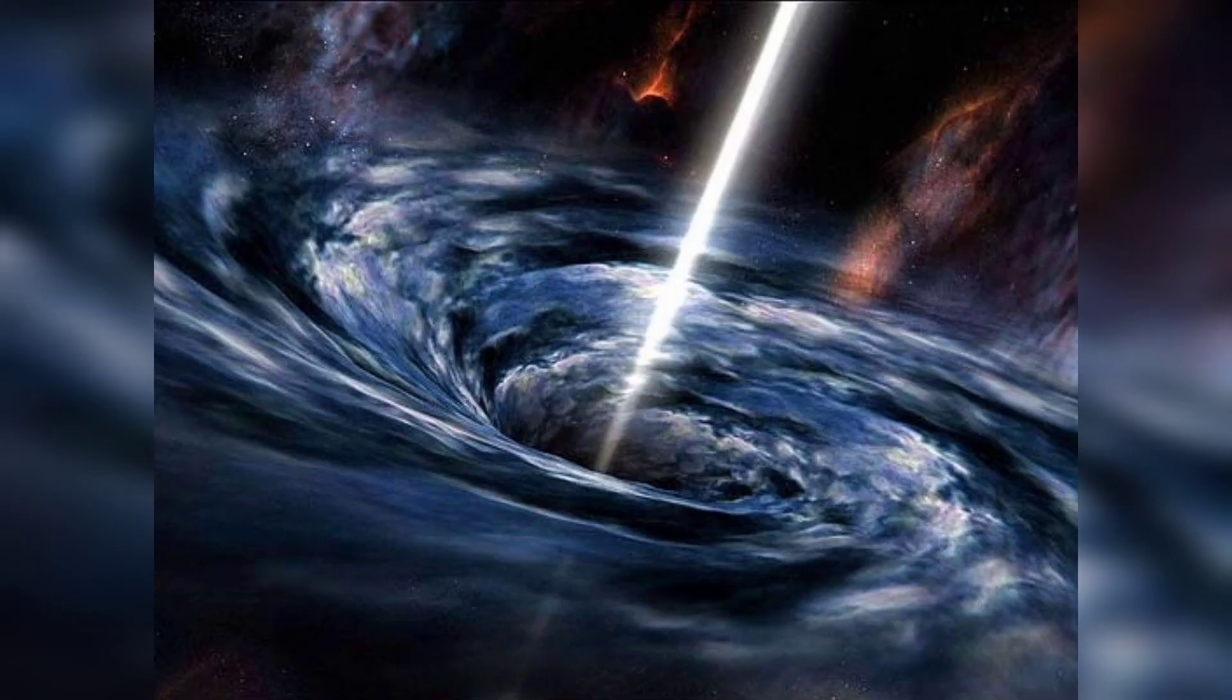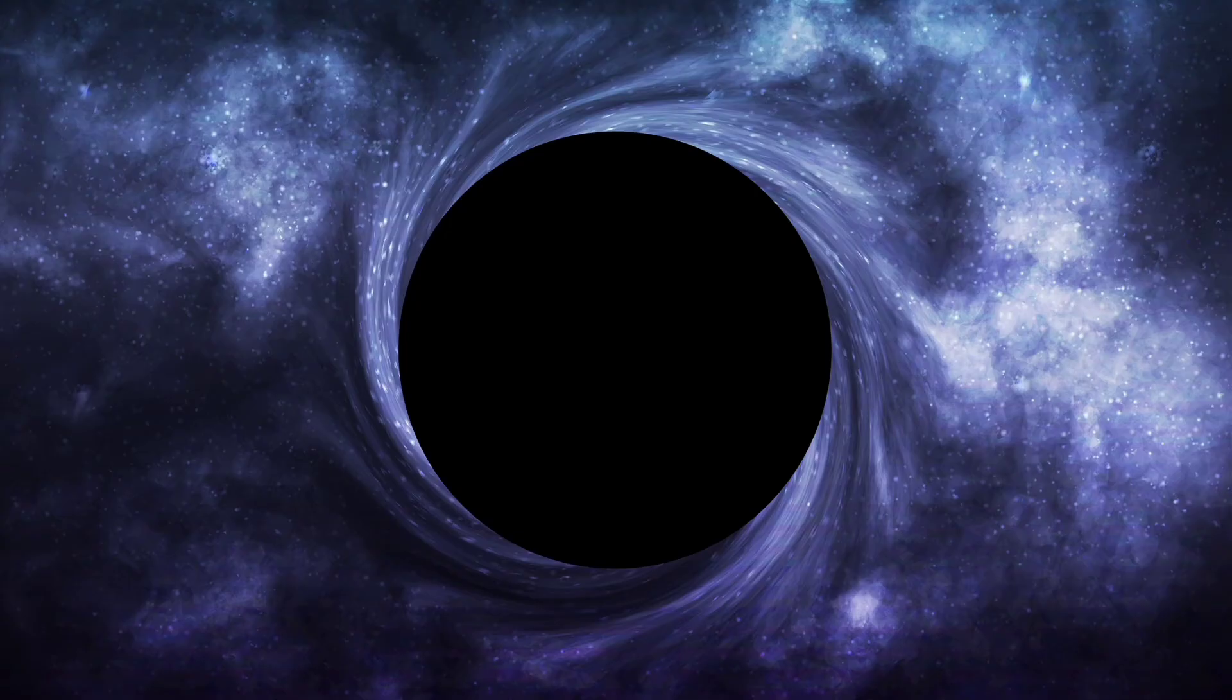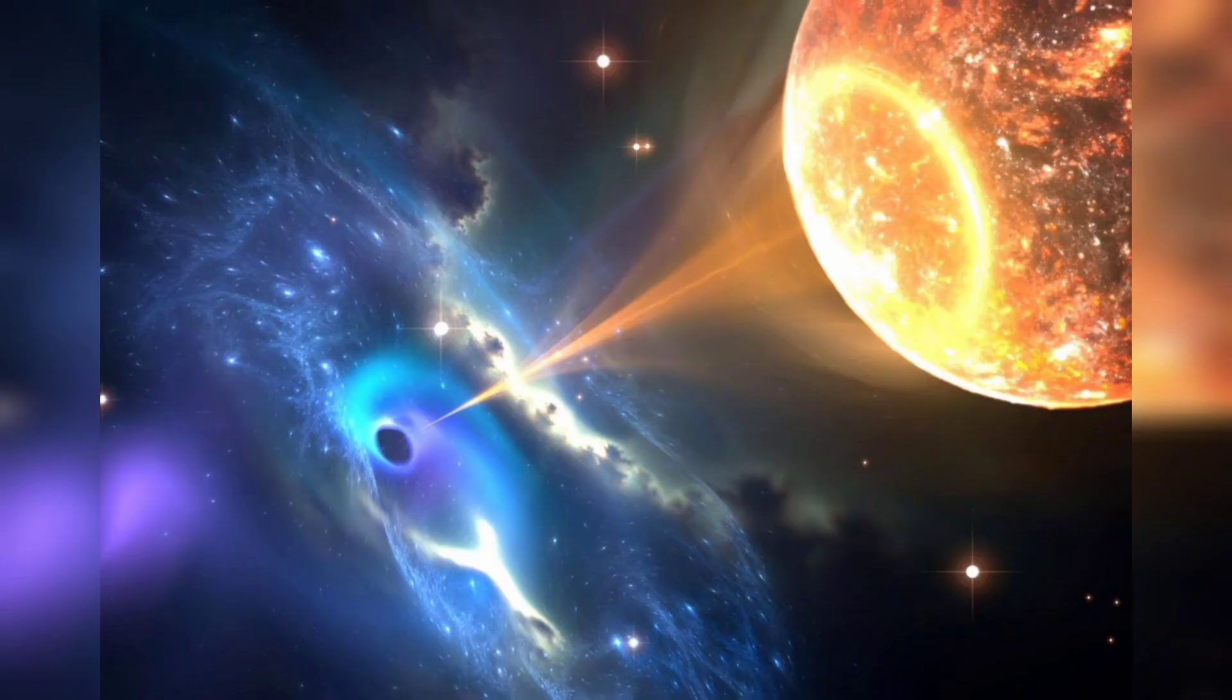Earth and other planets would orbit the black hole as they orbit the sun now. The sun will never turn into a black hole. The sun is not a big enough star to make a black hole.